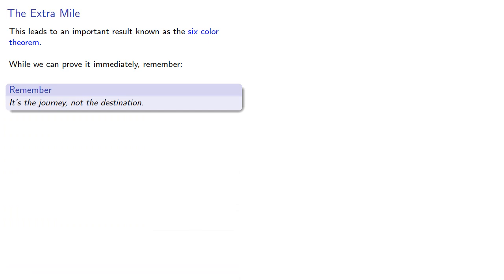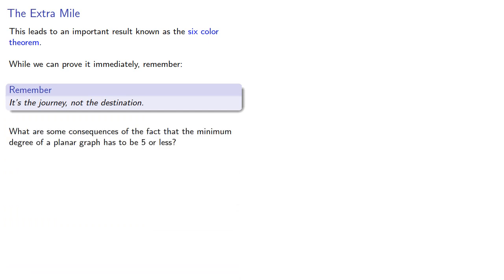This leads to an important result known as the six-color theorem. While we can prove it immediately, remember — it's the journey, not the destination. What are some consequences of the fact that the minimum degree of a planar graph has to be 5 or less?